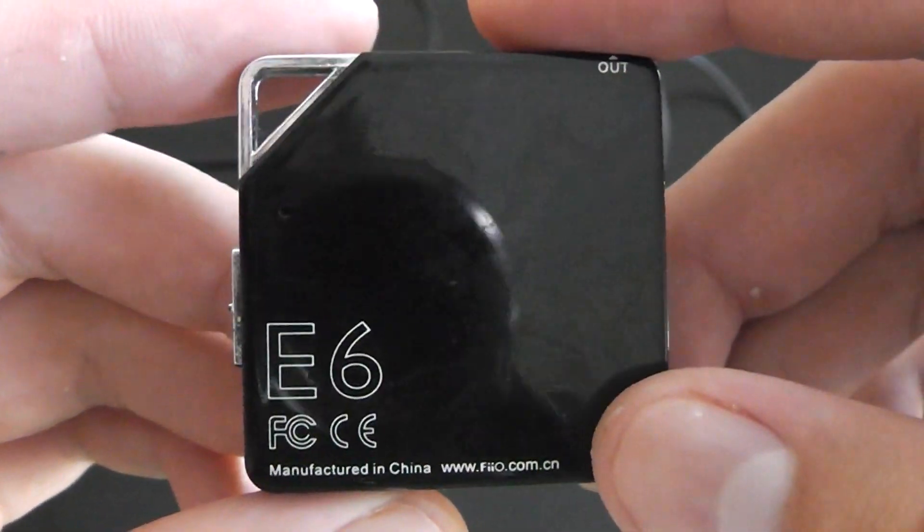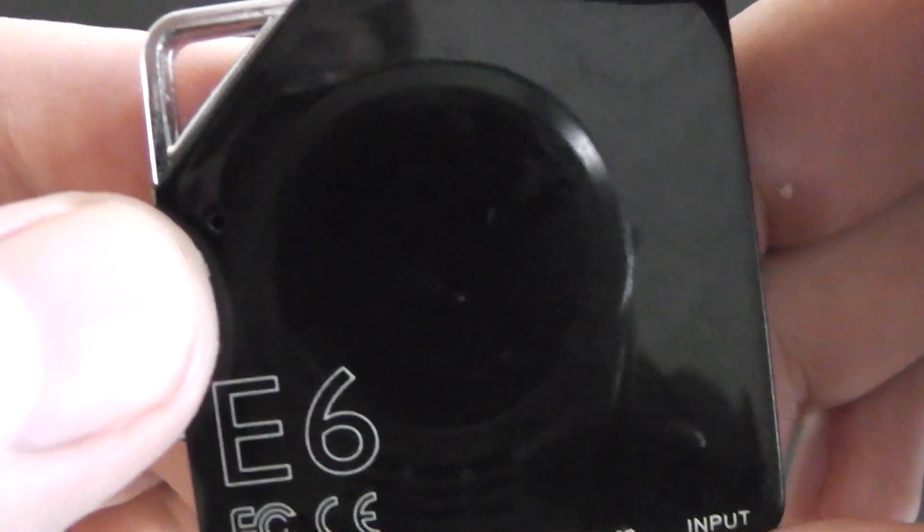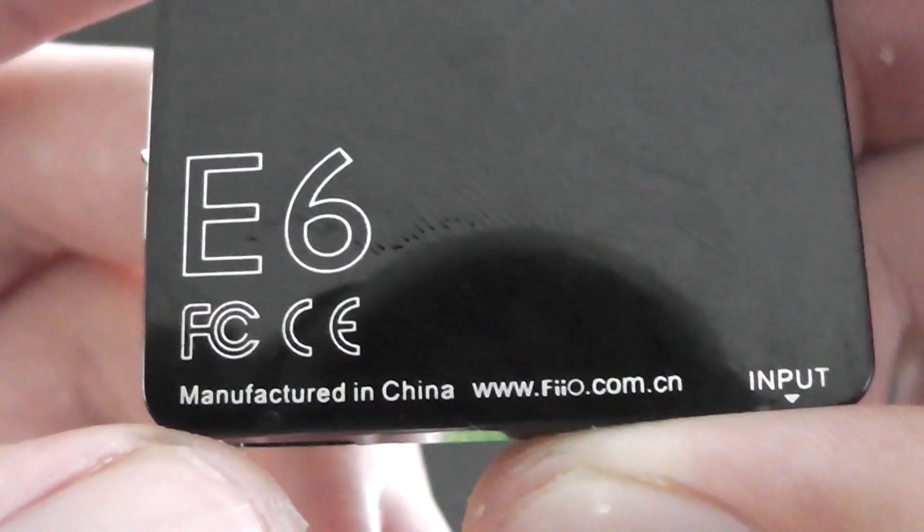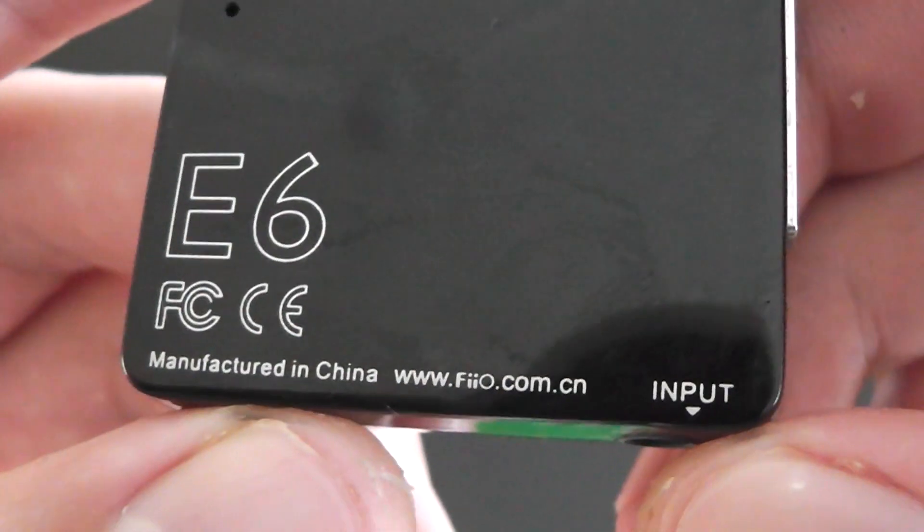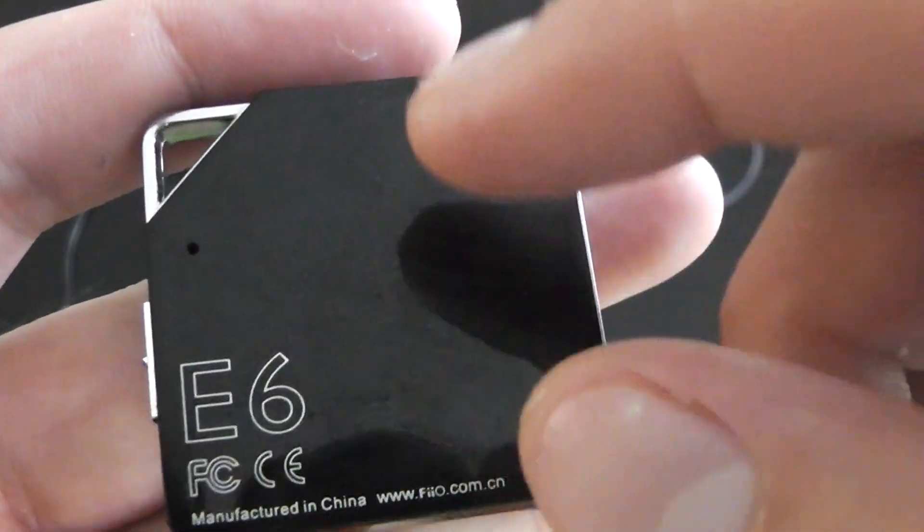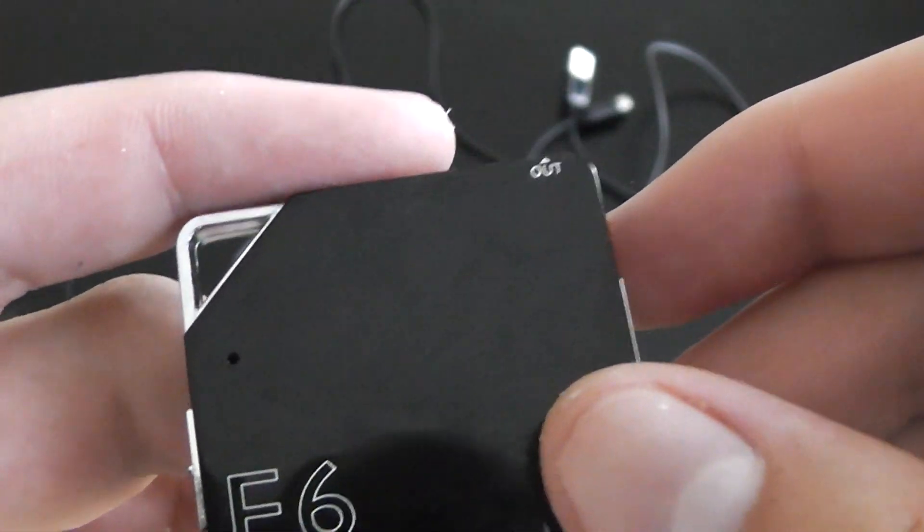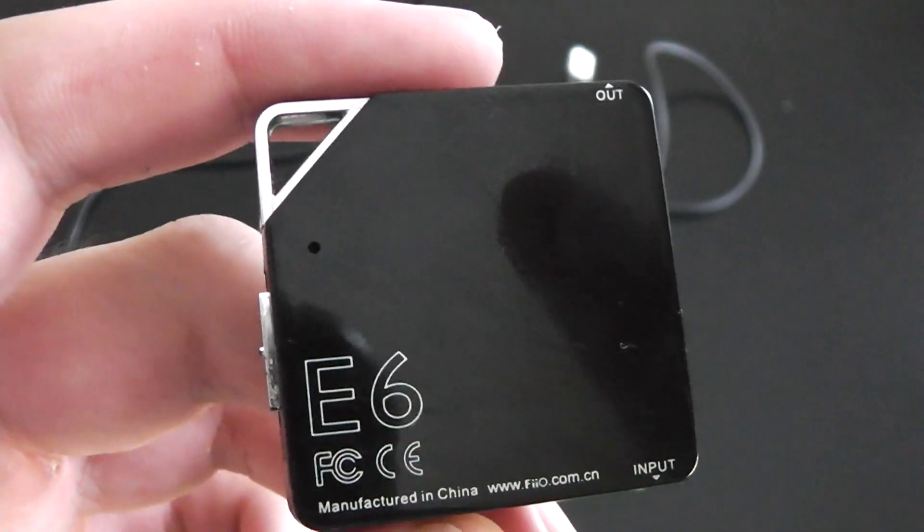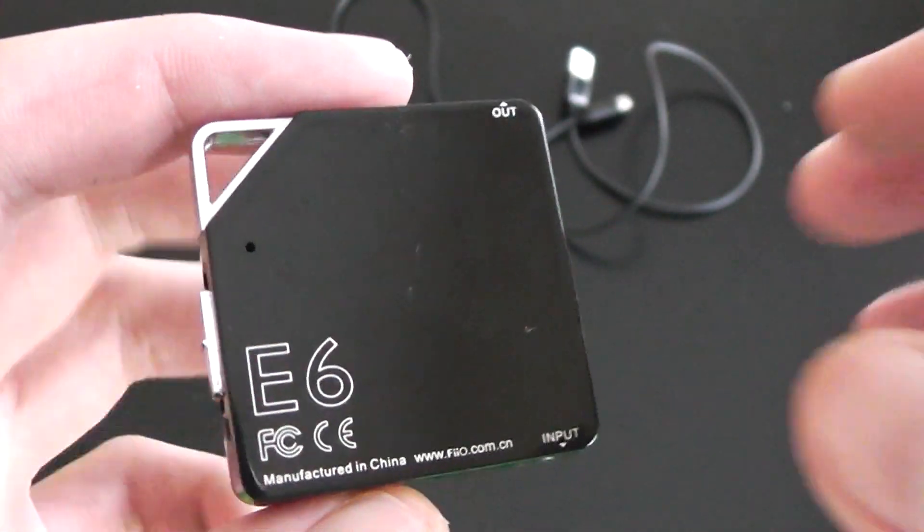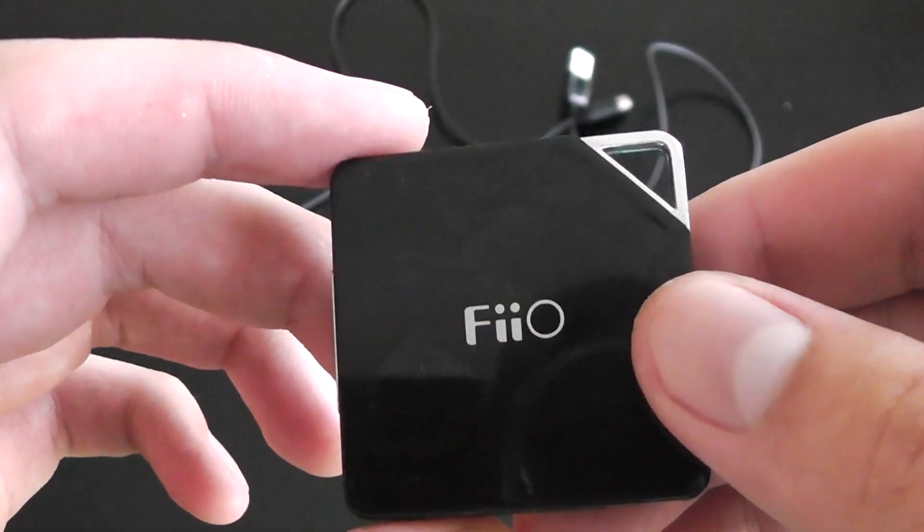The back is very simple. There's a little light here. I'll show you that when I turn it on. You know, E6, made in China. You know, everything made in China these days. And that's really about it. It includes a clip that you can clip onto your shirt, whatever it is, so you can easily take it on and go with you.